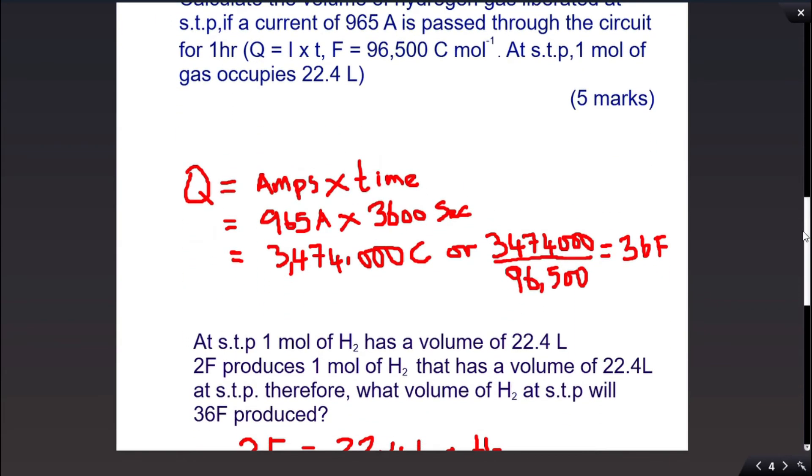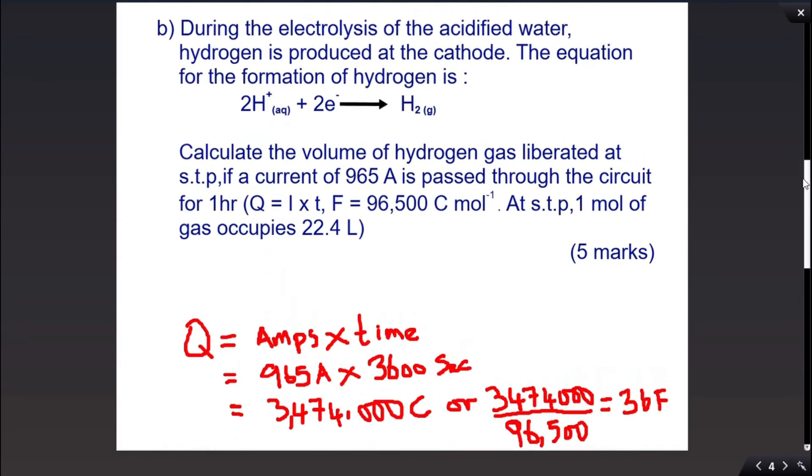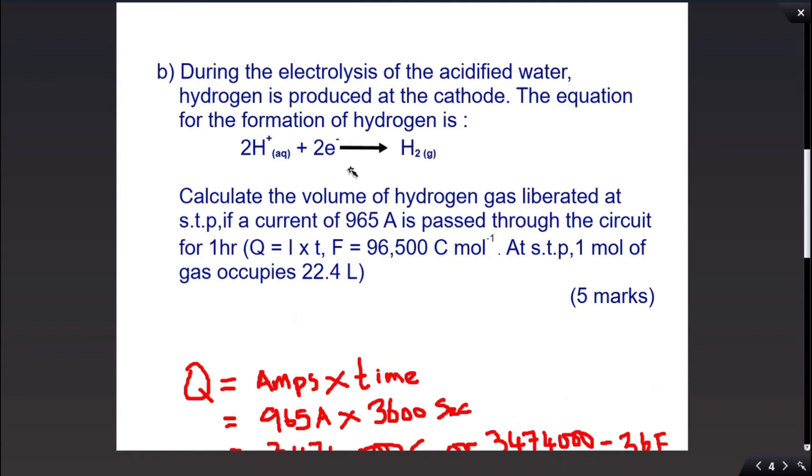At STP we know that one mole of hydrogen has a volume of 22.4 liters. Therefore, 2 Faradays produces 1 mole of hydrogen that has a volume of 22.4 liters at STP. So what that is saying, just look at the equation, it requires 2 Faradays to take these 2 electrons to the cathode where the hydroxonium ion or H+ will pick it up to produce hydrogen gas.